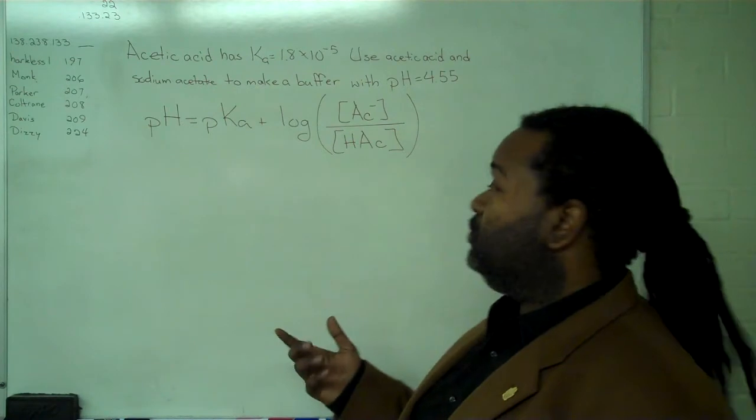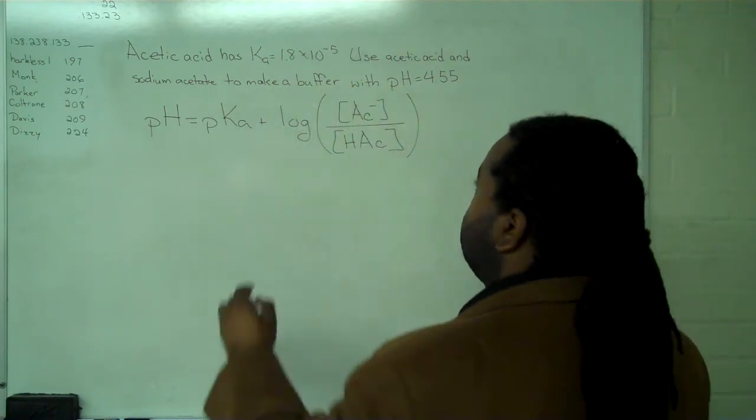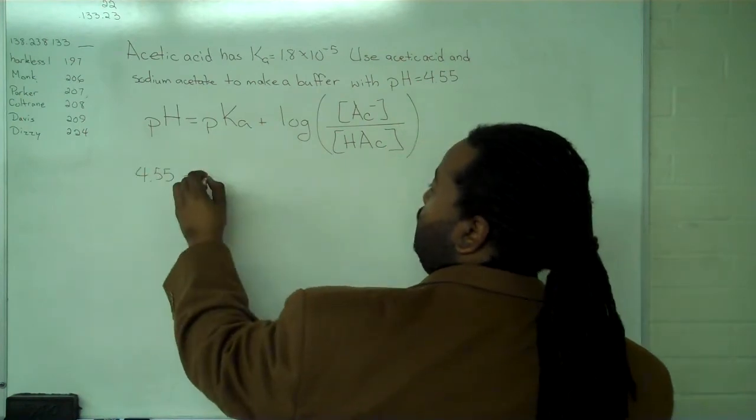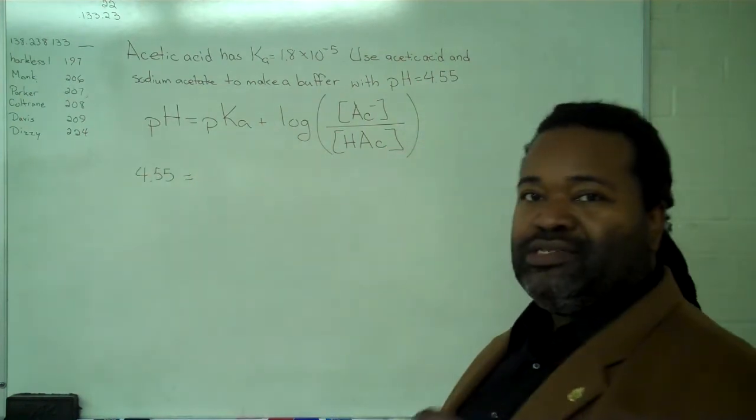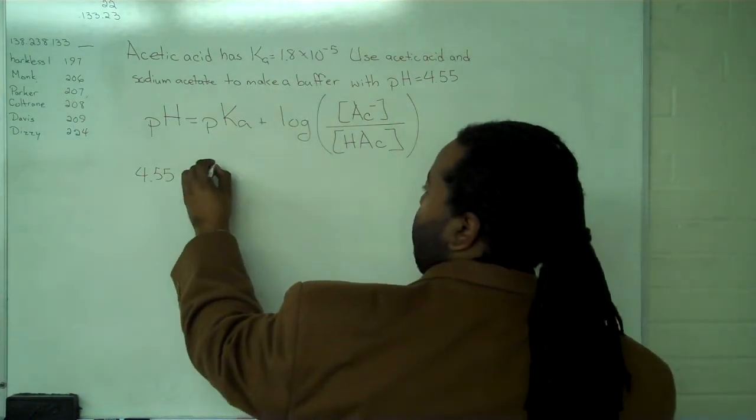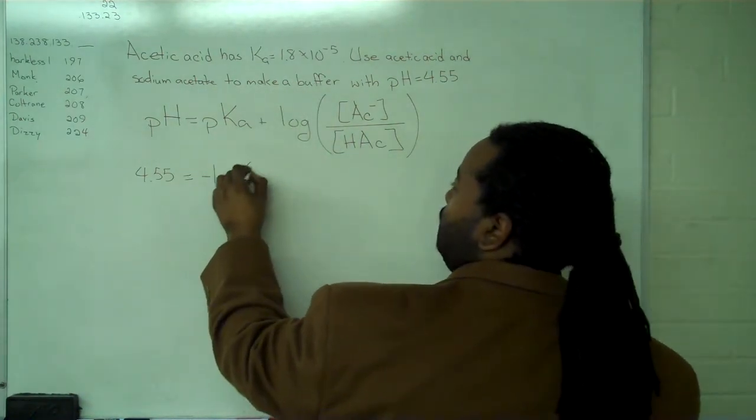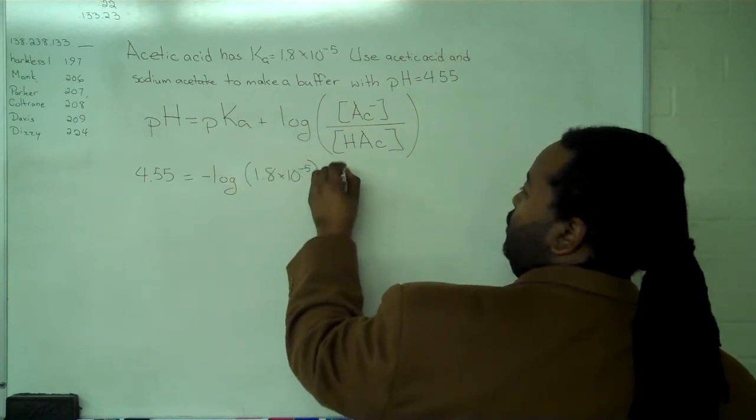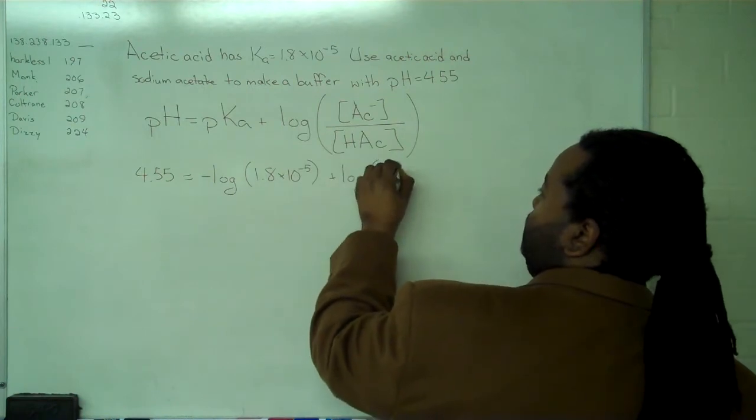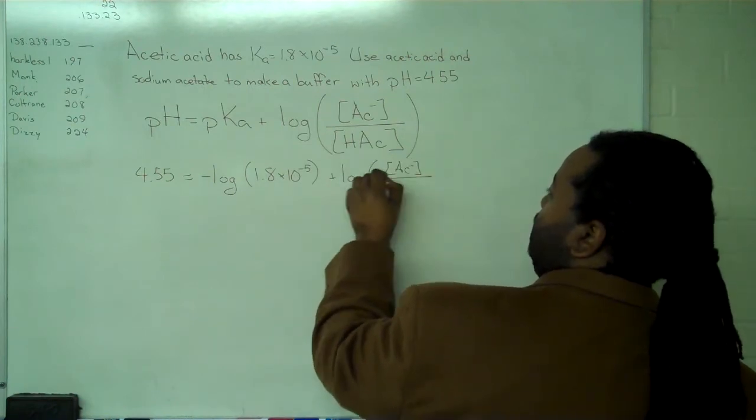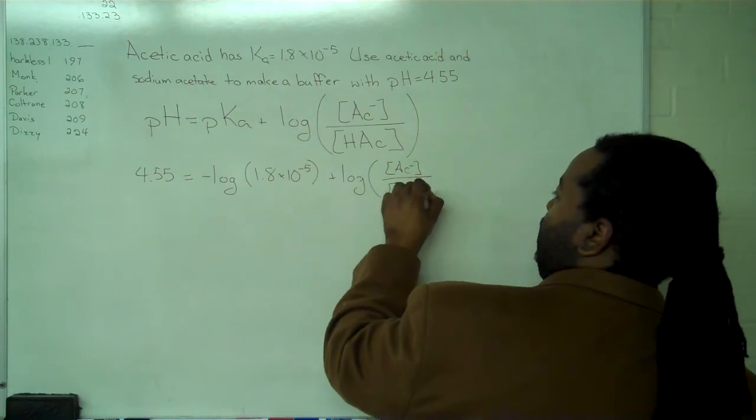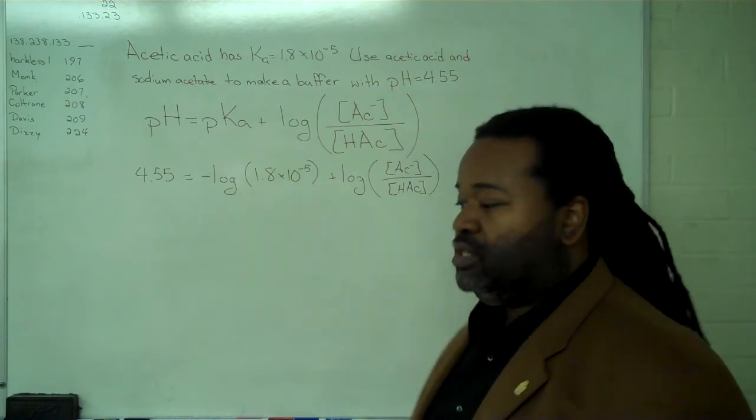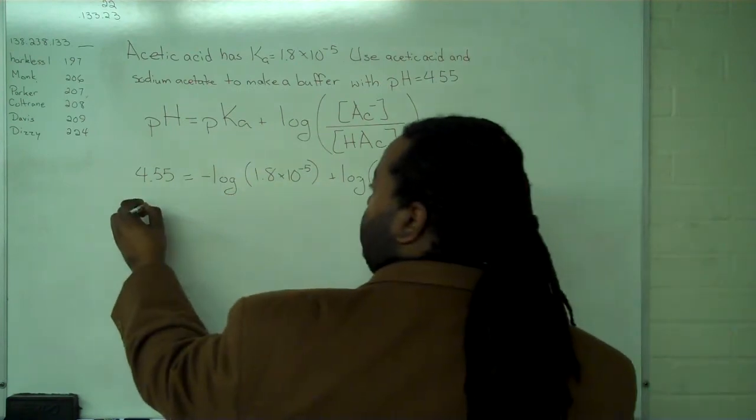Now we substitute the values: pH of 4.55 as the target. The pKa requires the negative log of Ka, so we write minus log of 1.8 times 10 to the minus 5, plus the log of the ratio of acetate ion to acetic acid. Taking the negative log gives us a pKa value of 4.74.